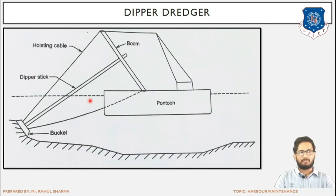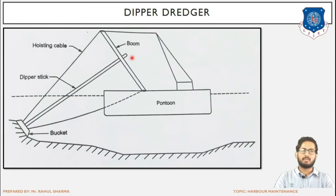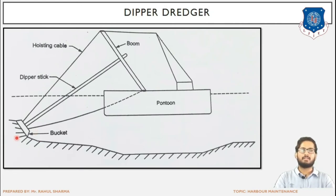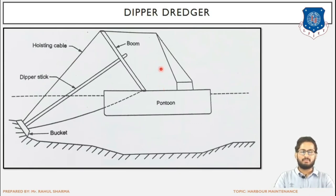In operation: the bucket starts empty, and using the boom it is directed to where dredging is to be carried out. The hoisting cable lowers it to the specific seabed location. The bucket cuts into the deposit and sediments fill the bucket. The hoisting cable then raises the bucket, it is swung to the deposition point, the sediments are deposited, and the bucket returns to its original position. This constitutes one cycle of the dipper dredger — 4 to 5 operations per cycle.